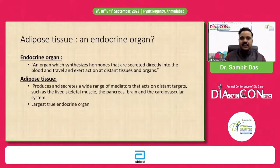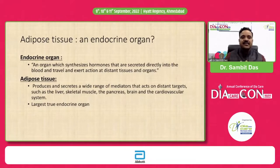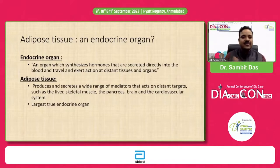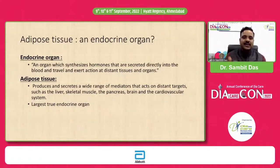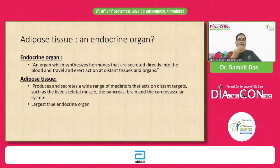The definition of an endocrine organ is an organ which synthesizes hormones that are secreted directly into the blood. There are no ducts for release of these hormones — they are directly released into the blood, travel, and exert action at distant tissues and organs. That is the exact definition of an endocrine organ.